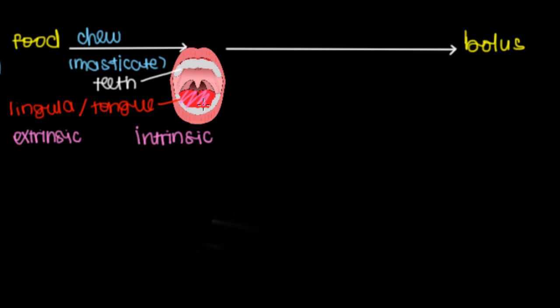Extrinsic muscles let us do things like elevate or raise the tip of our tongue and the opposite - depress or lower the tip of our tongue. It lets us protrude our tongue out of our mouth and also allows us to retract our tongue back into the mouth.